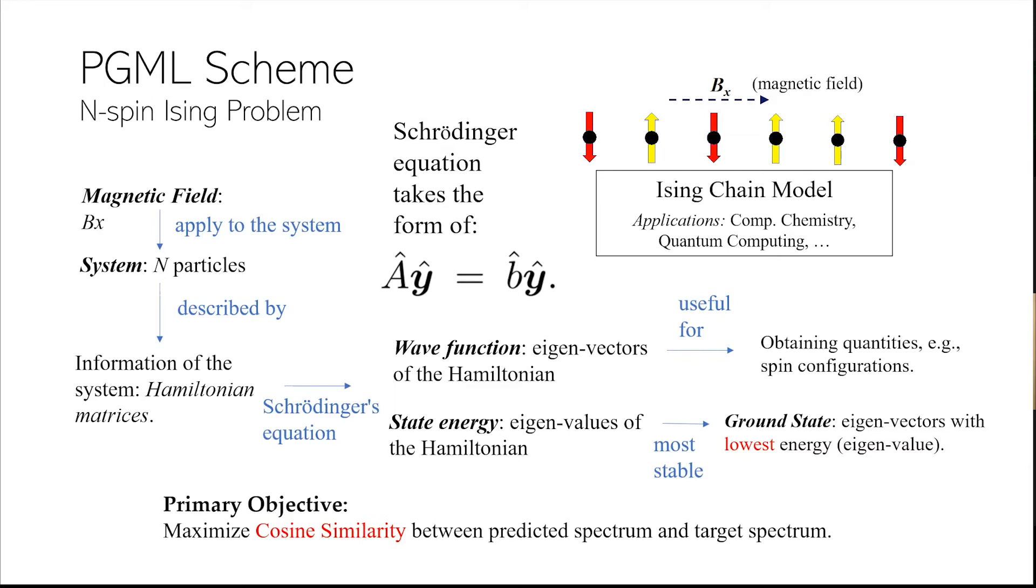The wave function can be useful to obtain quantities, for example the spin configurations. We're interested in finding out the ground state wave function which is the eigenvector with lowest energy or lowest eigenvalue. We're not interested in finding out the absolute value, the magnitude is not interesting for us for predicting wave functions. We're only trying to find a wave function that can maximize cosine similarity between our predictive spectrum and the target spectrum.